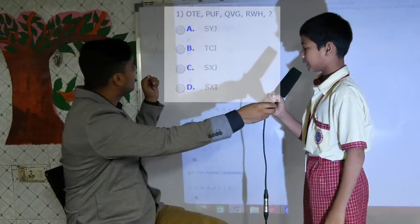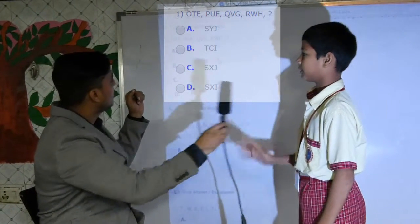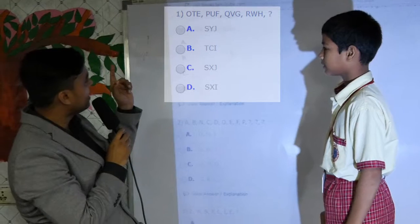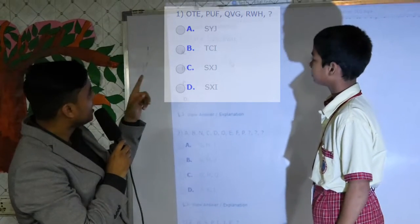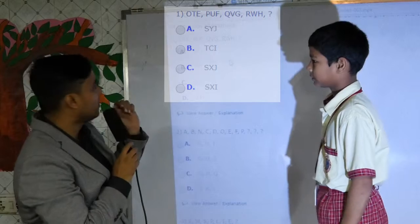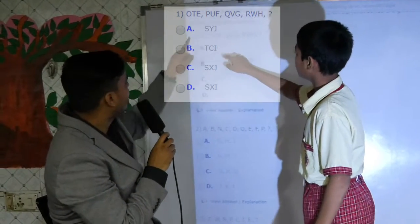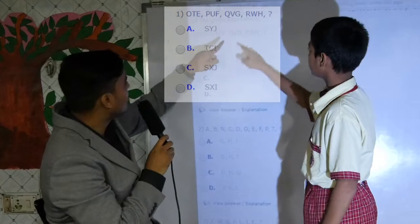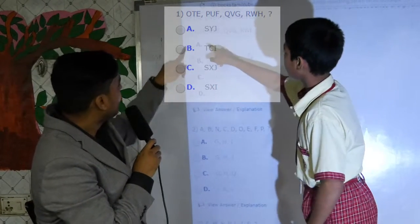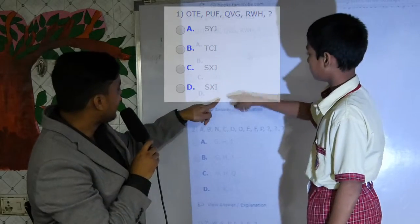The first, second, and third letters in each group are in alphabetical order. First letters: O, P, Q, R. Very good, the first is right. Second letters: T, U, V, W — it means after that it will come X. Very good. And last letters: E, F, G, H — and then it will come I.